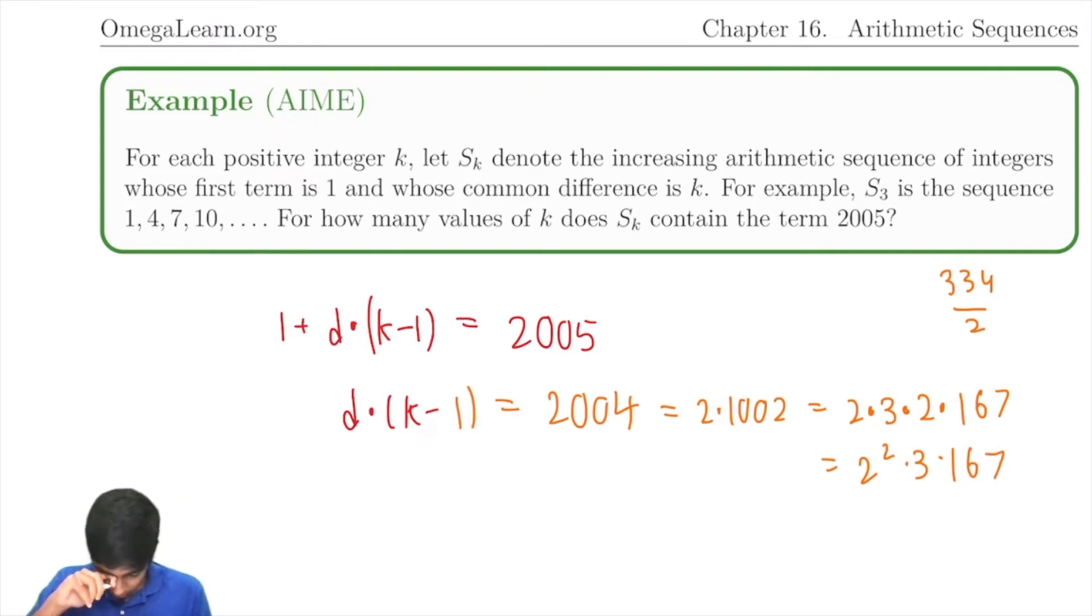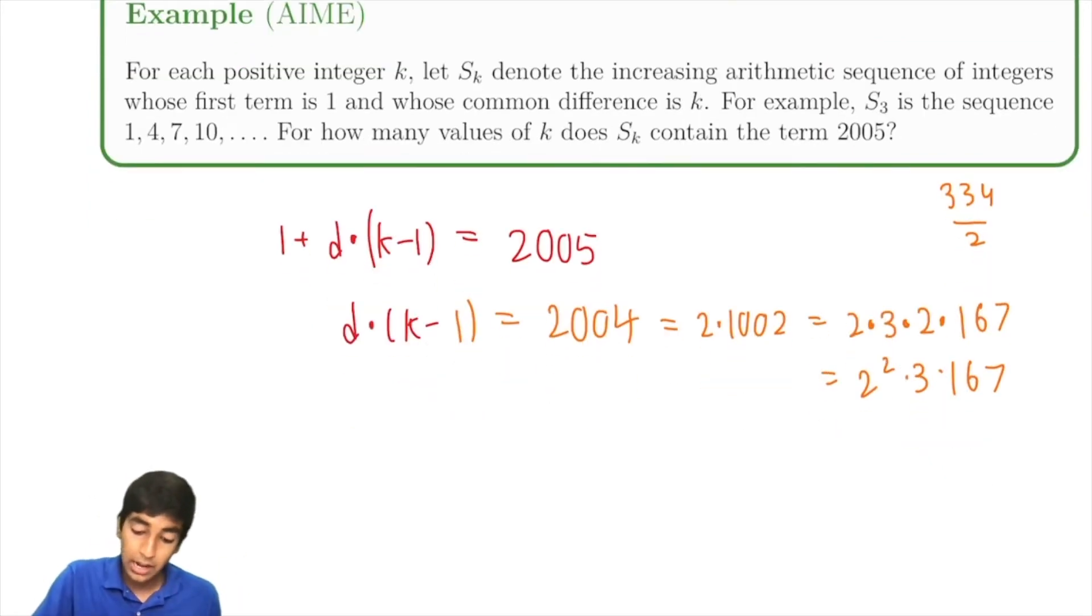How many choices for d? Well, if you know the number of factors of a number formula, the number of factors of 2004 is (2+1) times (1+1) times (1+1) = 3 times 2 times 2 = 12. So, there's 12 factors of 2004.